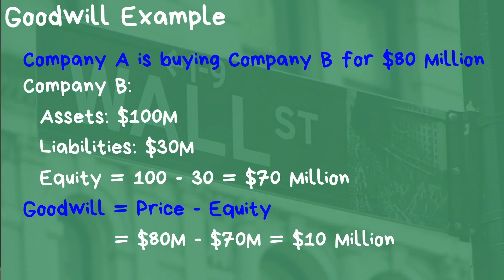Let's say Company A is going to buy Company B for $80 million. Company B has assets of $100 million and liabilities of $30 million, so Company B has equity of $70 million. Company A is buying Company B for $80 million, and because Company B has $70 million in equity, that's a $10 million difference between the price paid and the equity in the company being bought. When that transaction is complete, $10 million of goodwill is created for Company A.